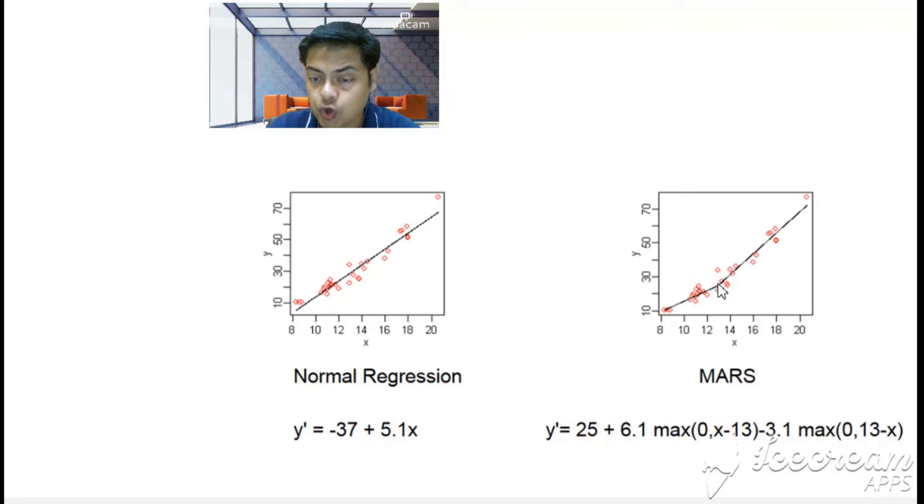There's a small joining point, that joining point is the knot. Here there's one knot, and you can see there are two equations on both sides of the knot. There are two linear equations on both sides of the knot—one linear equation is this one, second is this one.